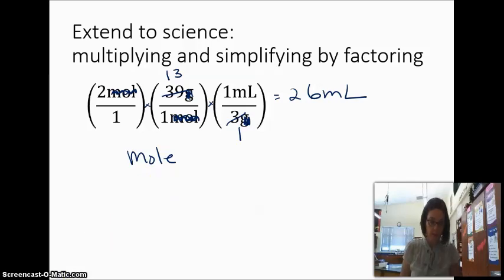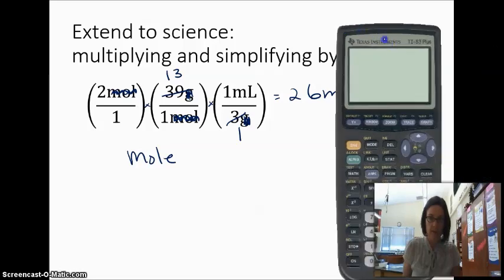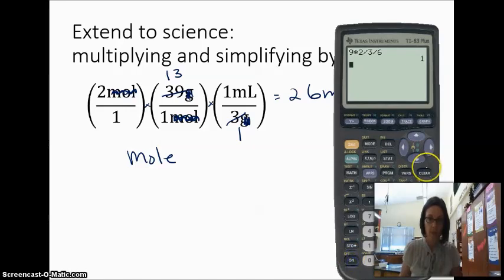The other thing I could do is I could pull up my calculator. If I didn't want to simplify all of that, and I could turn on my calculator. There we go. And I could do 2 times 39 divided by 3. And I would get 26.